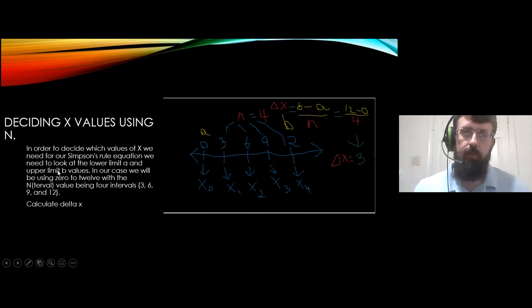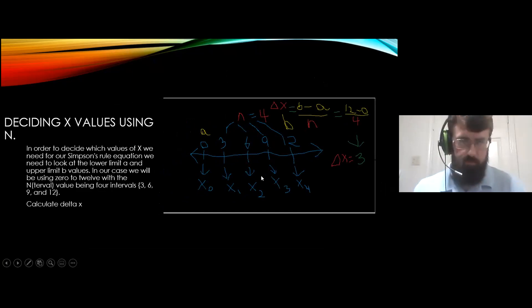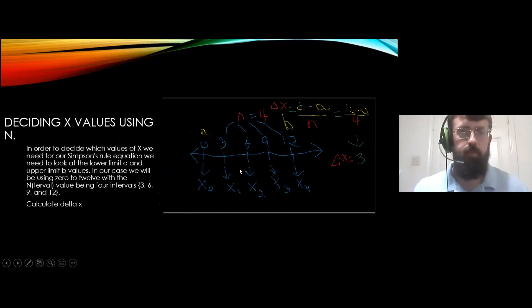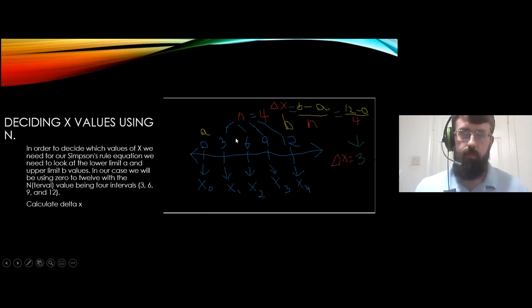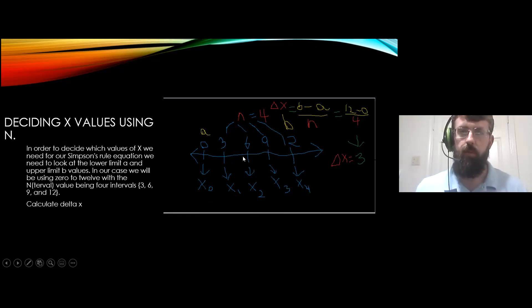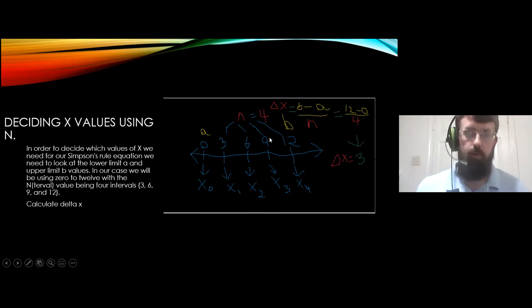First we draw a number line so we can find out the intervals from 0 to 12. In this case we're using n equals 4, which gives 4 intervals: x0, x1, x2, x3, x4, with values 0, 3, 6, 9, and 12 — going by steps of 3 because 12 divided by 4 is 3.